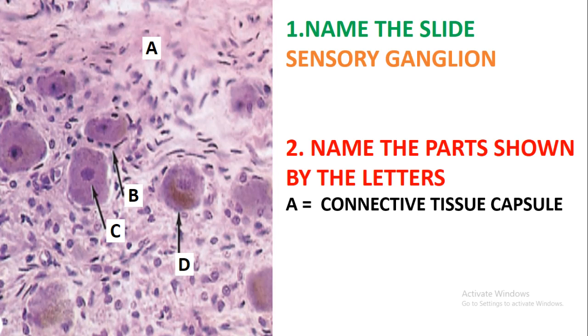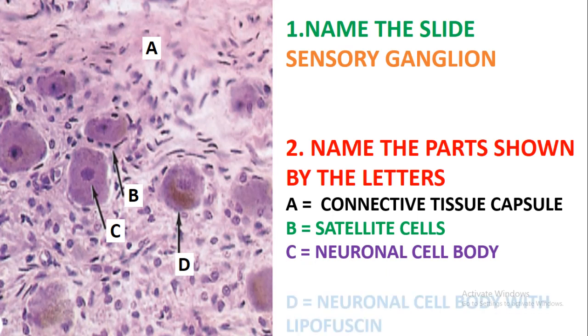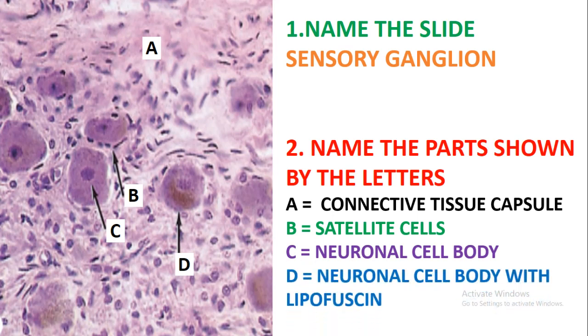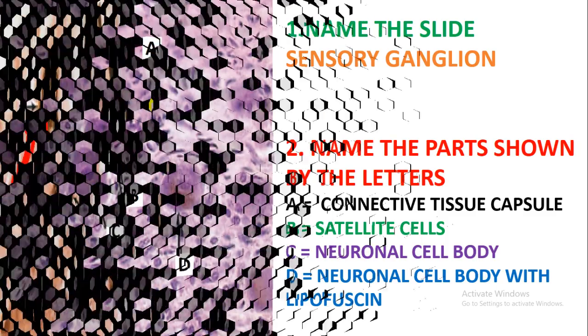B is showing the satellite cells. C is the neuronal cell body, and D is also the neuronal cell body with the lipofuscin.